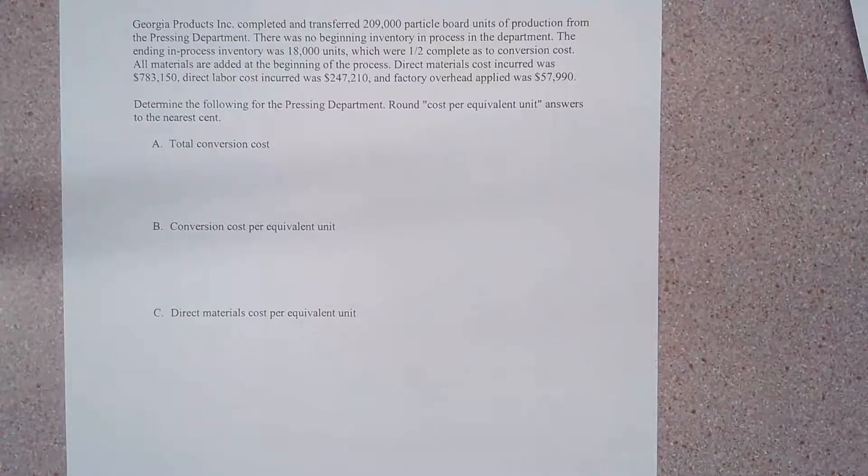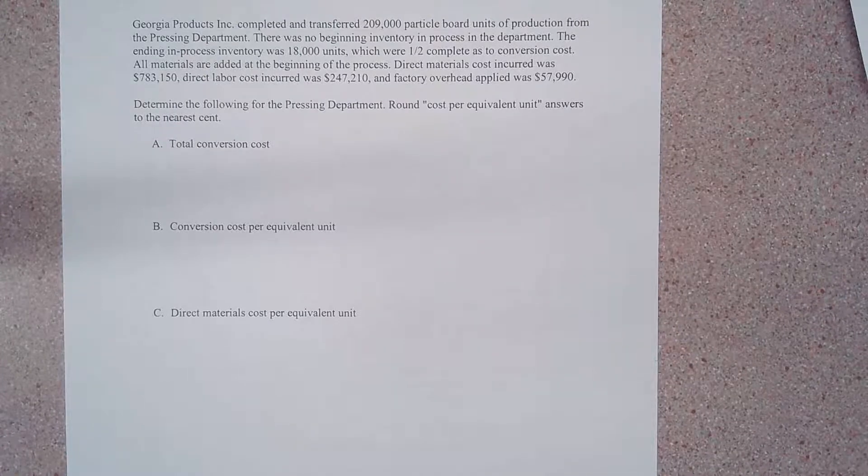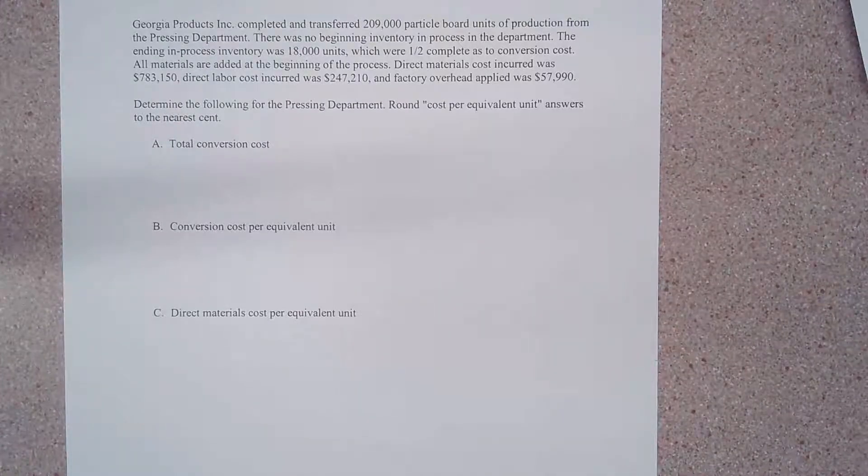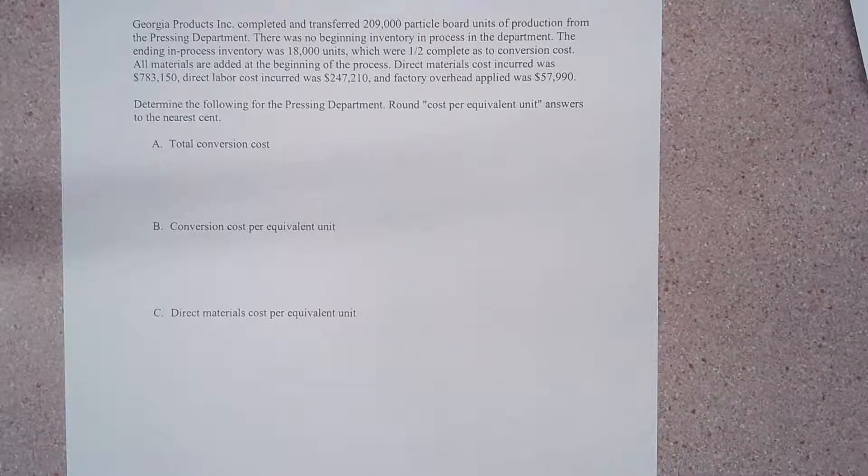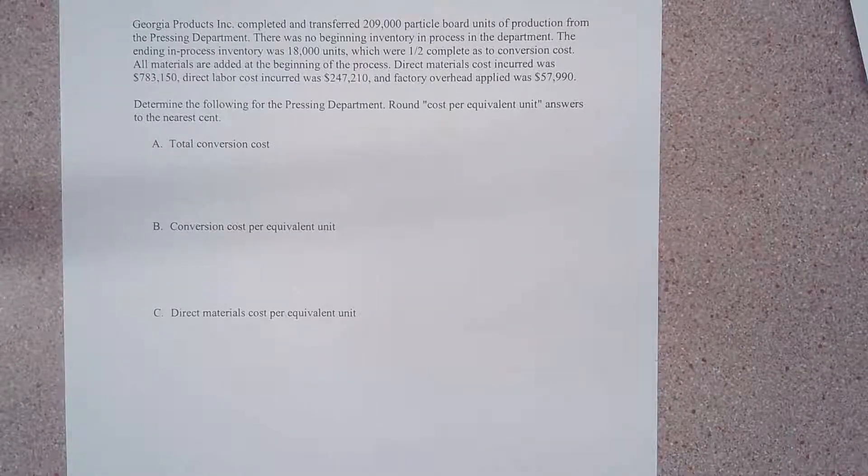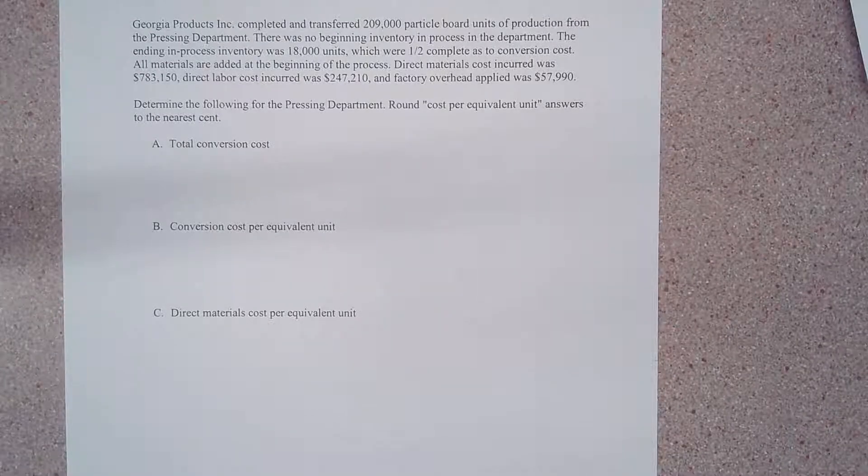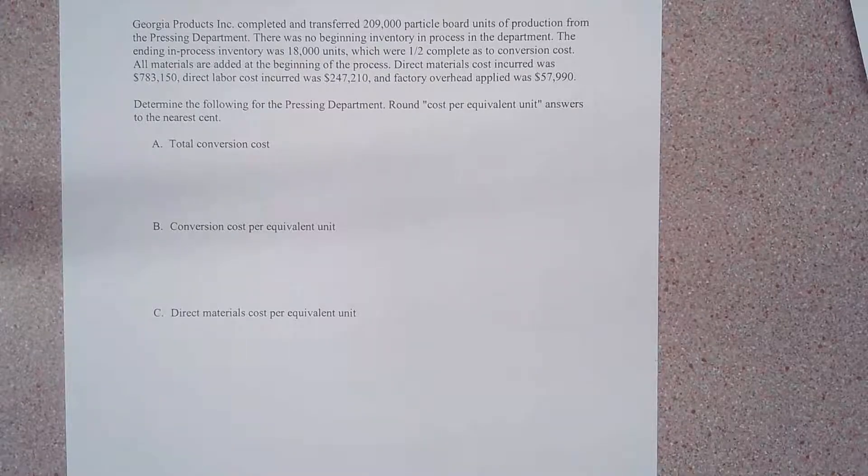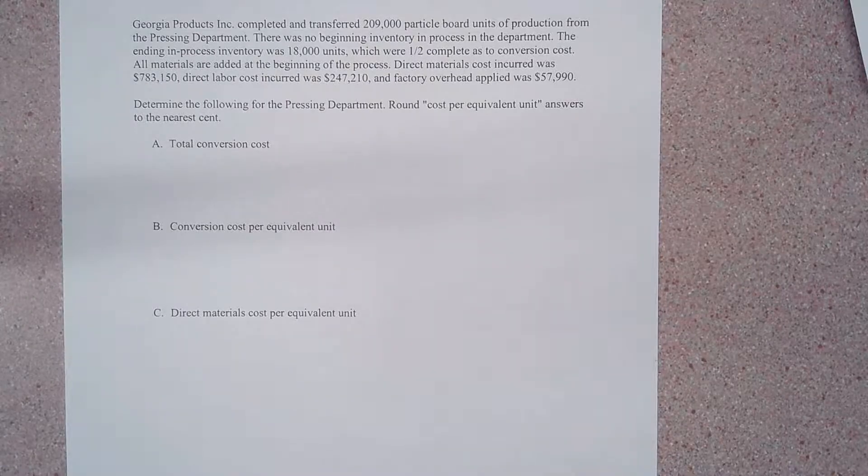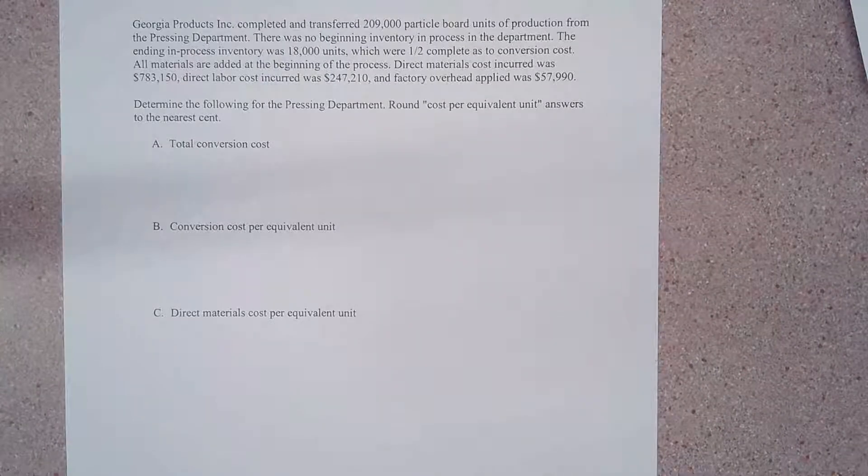Looks like we have a scenario here. Says Georgia Products Incorporated completed and transferred 209,000 particle board units of production from the pressing department. There was no beginning inventory in process in the department.